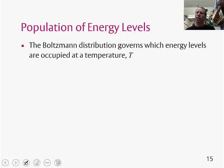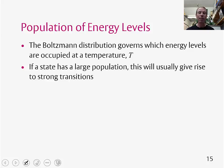So the factor that governs the population of energy levels is the temperature. And then once we know the temperature, the Boltzmann distribution tells us about the relative populations of these levels. And if a state has a large population, as I said before, this will give rise to strong transitions.